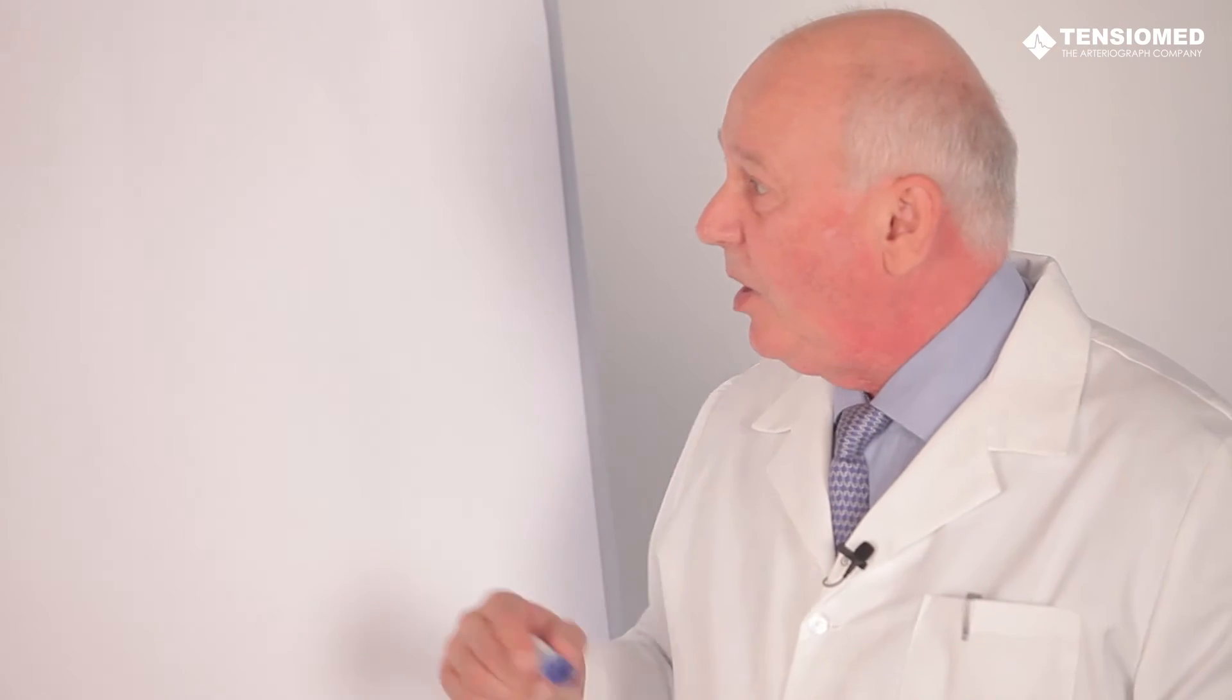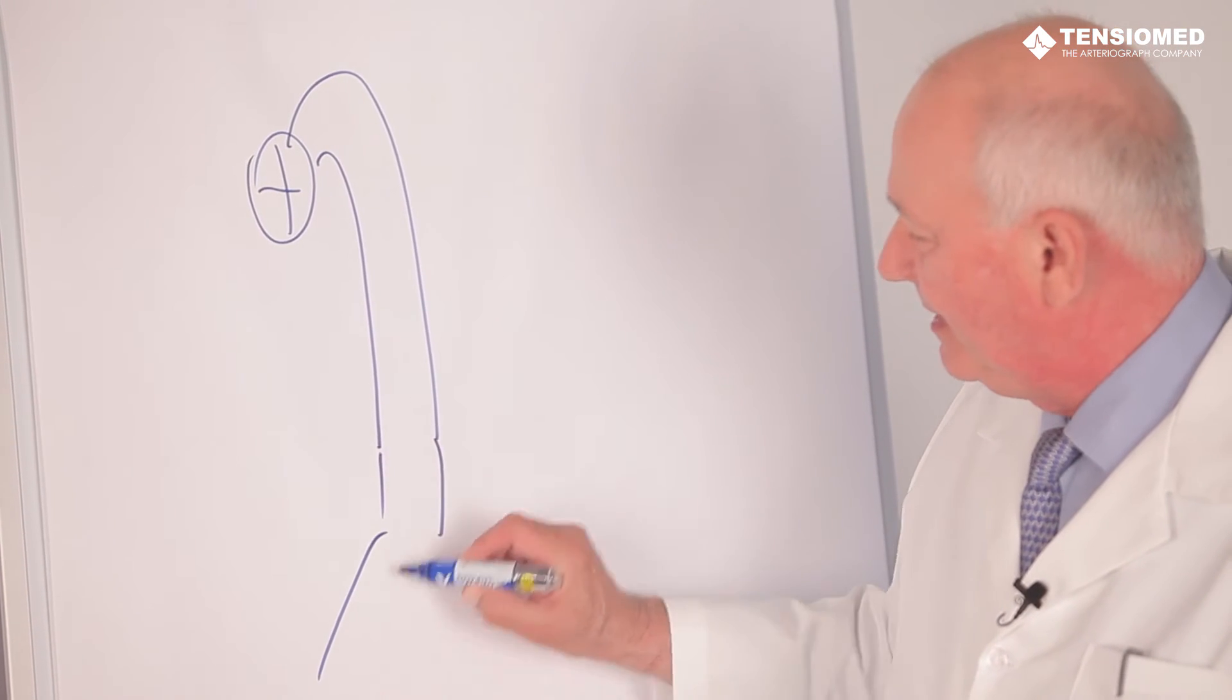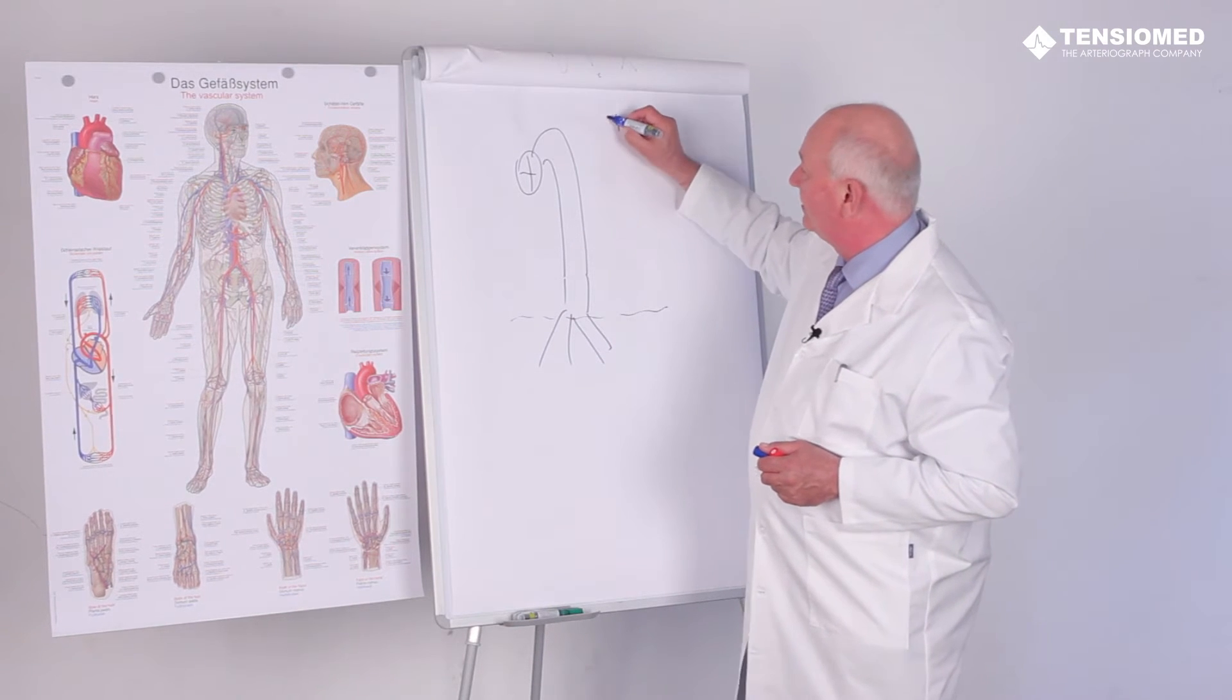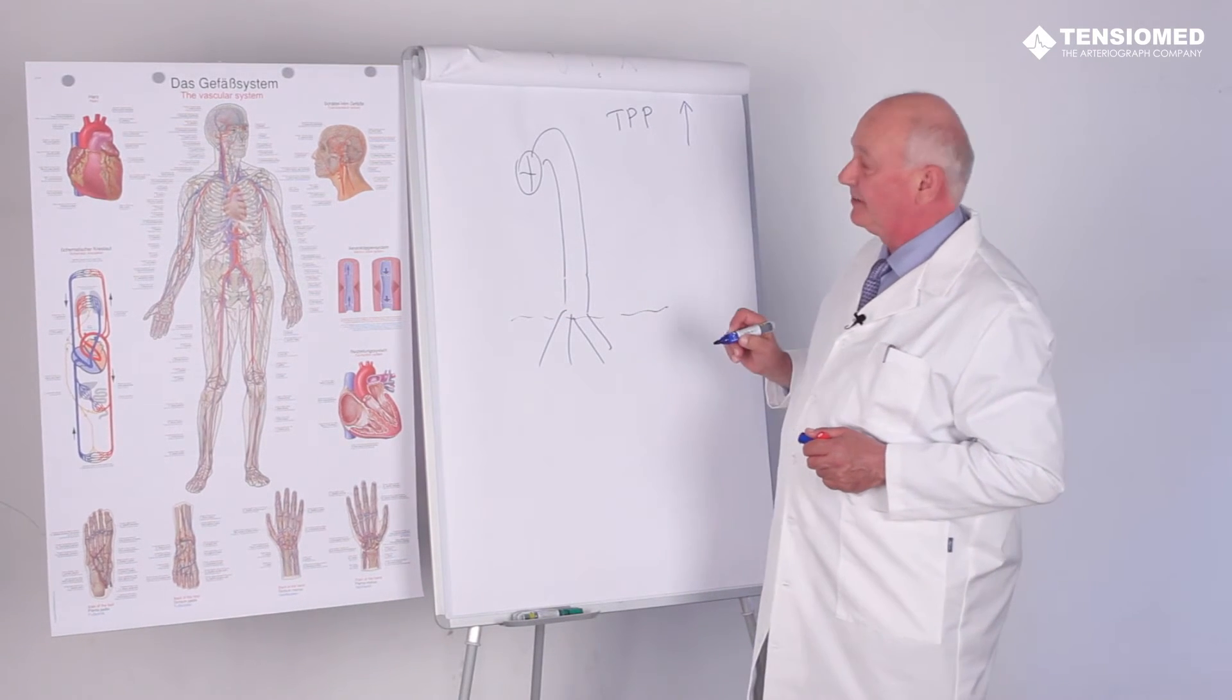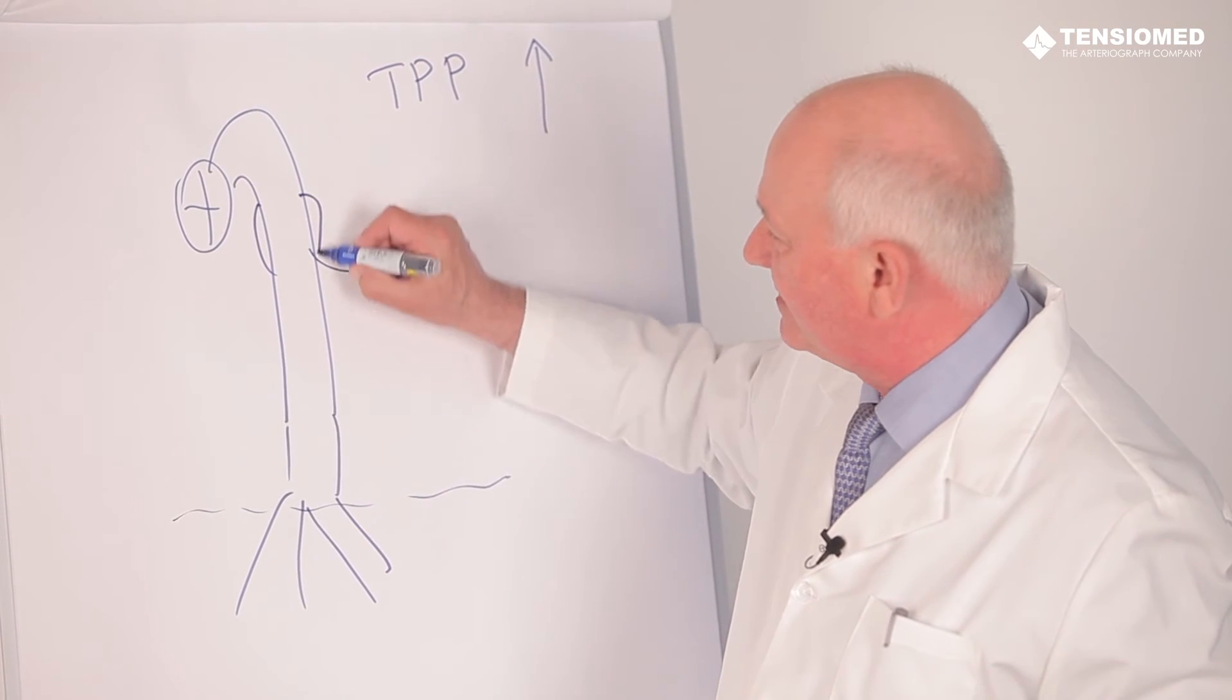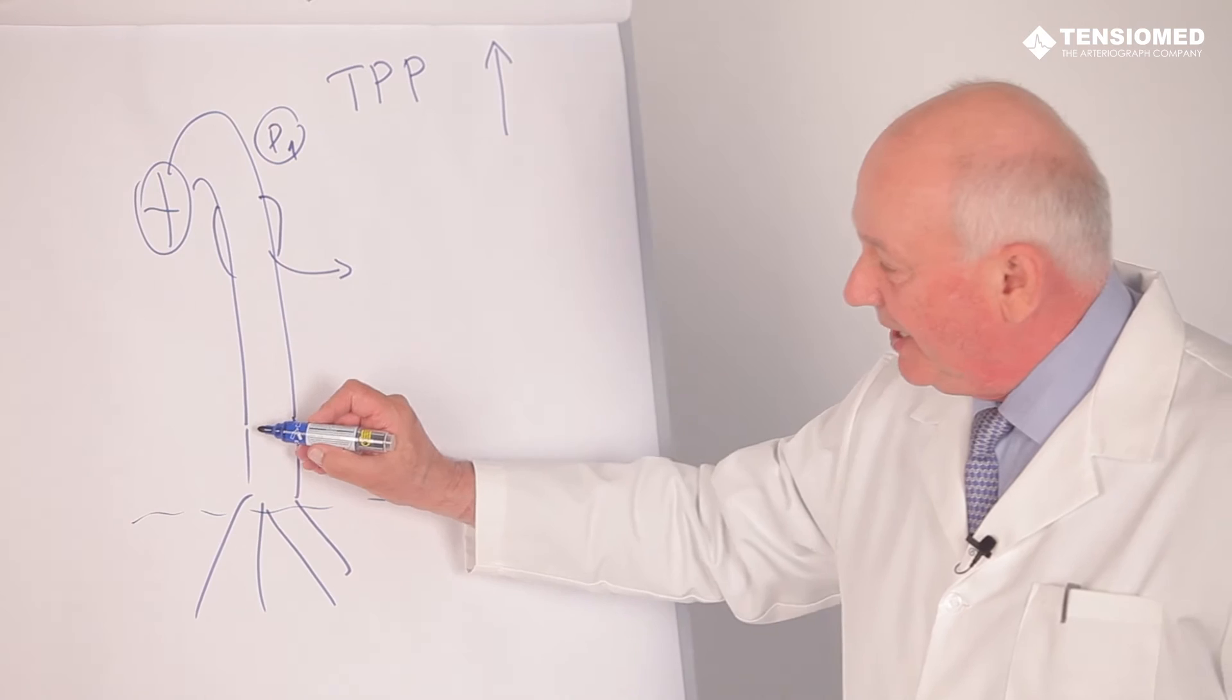The augmentation index is basically based on the peripheral vascular resistance at the upper body. If the total peripheral resistance of the arteries and arterioles are high, in this case, towards the periphery during the ejection and during the P1 action, just a small energy can be driven towards the periphery.